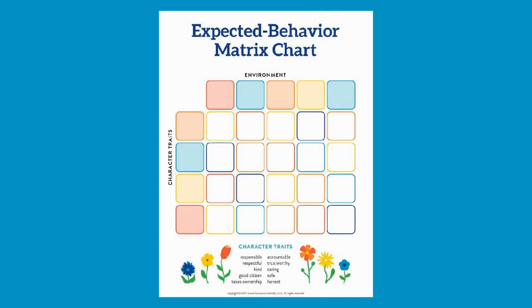Welcome back. Hopefully you have some really solid traits picked out. We will now move on to transforming those character traits to an expected behavior matrix chart that can be utilized school-wide to promote positive behaviors in your students. In your guidebooks, you have an expected behavior matrix chart that you can use to guide you in developing that PBIS system.